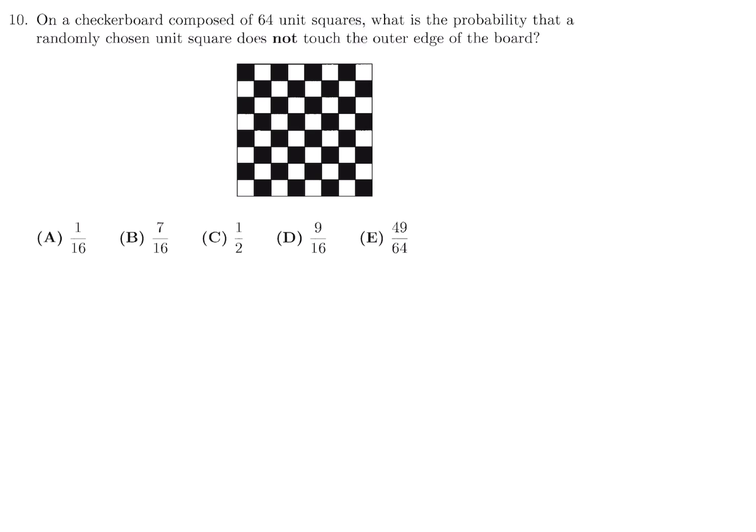On a checkerboard composed of 64 unit squares, what is the probability that a randomly chosen unit square does not touch the outer edge of the board? So the ones that do touch are obviously the ones that are these guys, right? All these guys. I'll just put a little line through them. Those guys touch the outer edge. So all the ones that are in the middle don't. And so the ones in the middle are all of these guys. These ones don't touch the outer edge. So how many of them are there? One, two, three, four, five, six. And then it's a six by six. So six times six, which is 36, don't touch. And they told you in the question that 64 is a total. So the probability is 36 over 64.